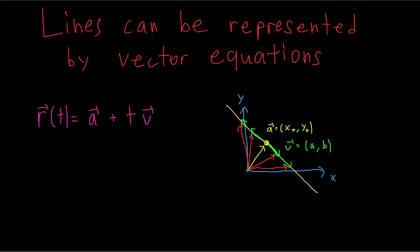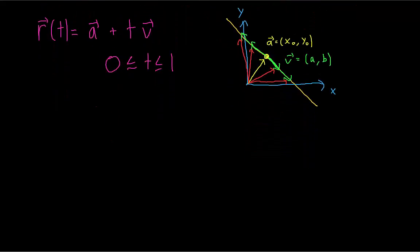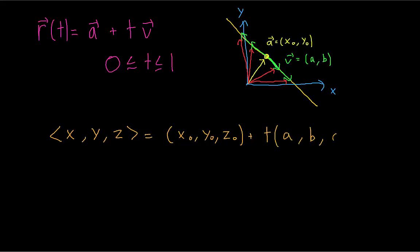If we only want a segment of the line, all we have to do is limit the domain of T. We just have to figure out which values of T correspond to the line segment we want. For example, we could say T has to be between 0 and 1. Writing out the components of all these vectors: T represents any point on the line, so X, Y, and Z. A is our initial point on the line, and V is our direction vector pointing parallel to the line with components A, B, and C.